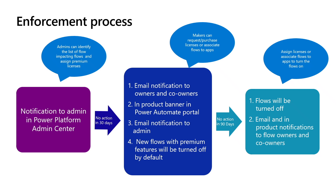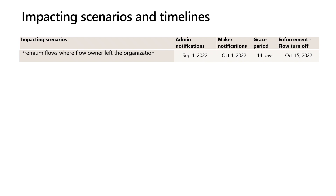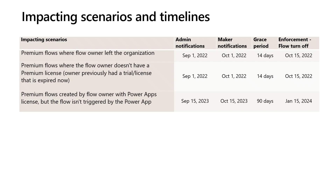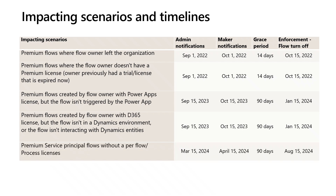If no action is taken for 90 days, non-compliant flows will be turned off and we will send an email notification to owners and co-owners. At any stage of the process, admins or owners can assign premium licenses or associate these flows with corresponding apps. These timelines include initial admin notifications to the actual enforcement dates. We are deploying these enforcements one geo region at a time, so dates may vary based on your location. Scenarios include premium flows where the flow owner left the organization, premium flows where the owner doesn't have a premium license, and premium flows owned by a user with a Power Apps license but not within app context.